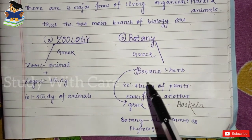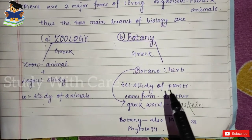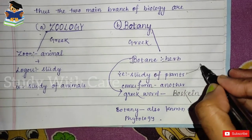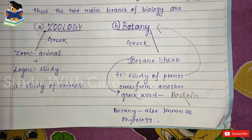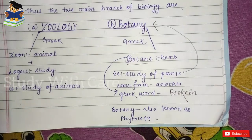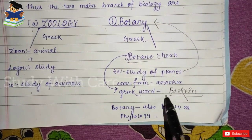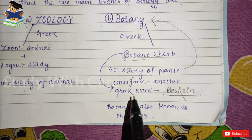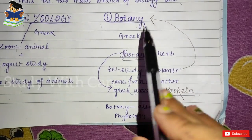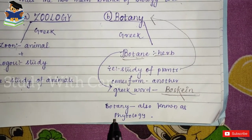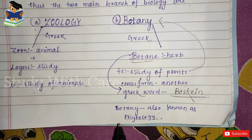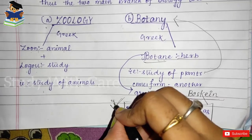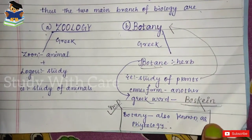Botany comes from the Greek word botan, meaning herb, so botany is the study of plants. Botany also comes from another Greek word, boscan. Botany is also known as phytology — this is also a very important point to remember.